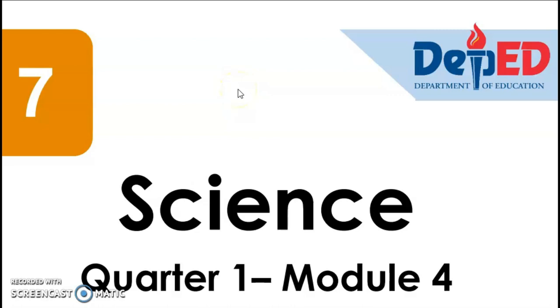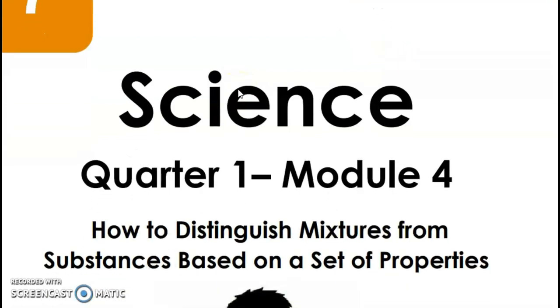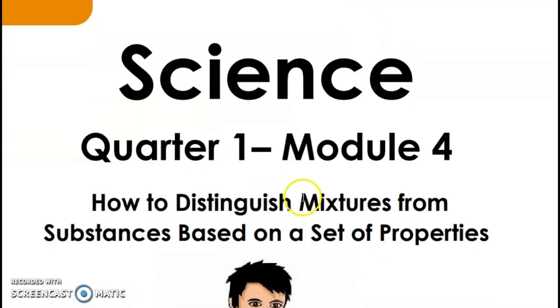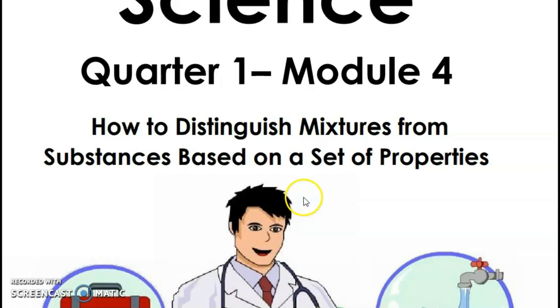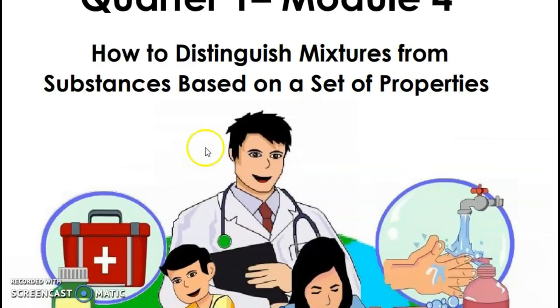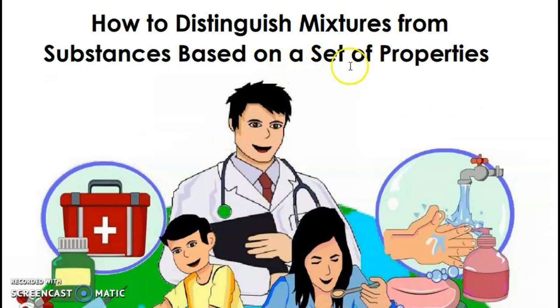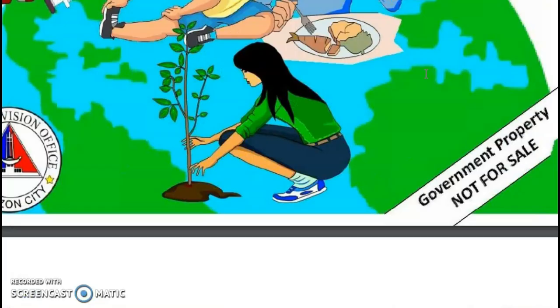Hello students, welcome to our Science Quarter One Module for Grade 7. The title is: How to Distinguish Mixtures from Substances Based on a Set of Properties.